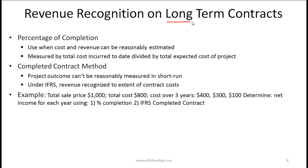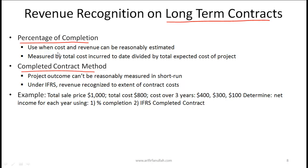Now let's talk about long-term contracts and how we recognize revenue on them. There are two different methods: the percentage of completion method and the completed contract method. The percentage of completion method is used when the cost and revenue can be reasonably estimated — measured by total cost incurred to date divided by total expected cost of the project. The completed contract method is used when the project outcome cannot be reasonably measured in the short run. Under IFRS, revenue is recognized to the extent of contract costs.